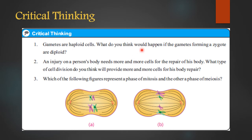When gametes combine, chromosomes double: normally 23 + 23 = 46 in the zygote. But if gametes were diploid with 46 chromosomes each, the zygote would have 46 + 46 = 92 chromosomes. Since each species has a fixed chromosome number, 92 chromosomes would mean the offspring would not be the same species — the species identity would change.